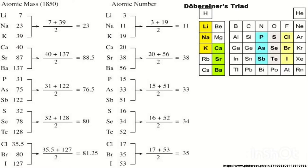Lithium's atomic mass is 7, sodium is 23, and potassium is 39. If you add the atomic mass of lithium (7) and potassium (39) and divide by 2, you will get the atomic mass of sodium. He concluded that the atomic mass and density of the middle element in each triad is the approximate average of the atomic mass and densities of the first and the third elements.